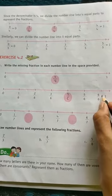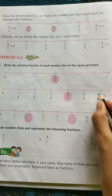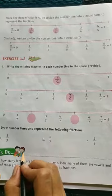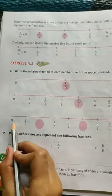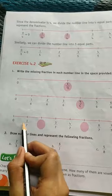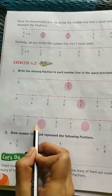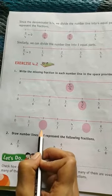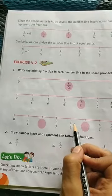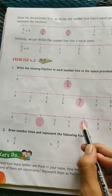6 upon 6 is equal to 1 as numerator and denominator are the same. Next, 0, after 0: 1 upon 7, after 1: 2 upon 7, then 3 upon 7, 4 upon 7. After 4: 5 upon 7.